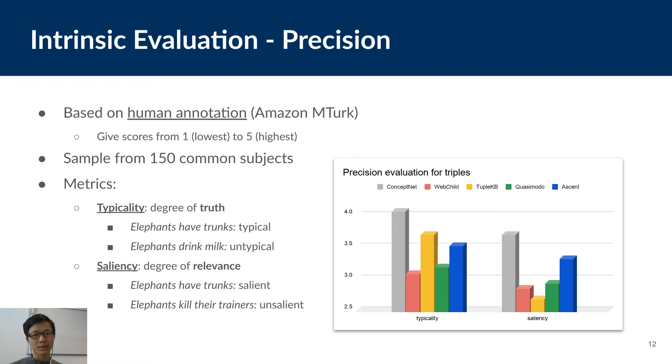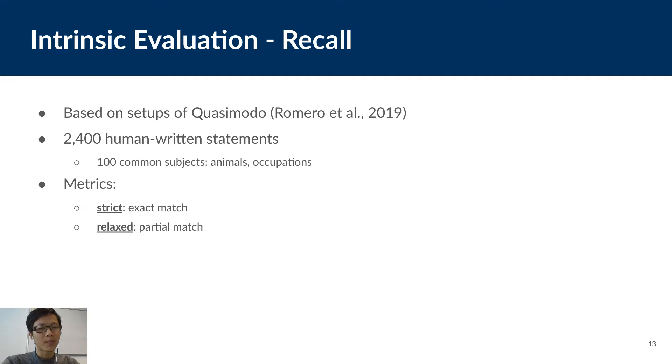The results show that among automatically built KBs including Webchild, Quasimodo, TupleKB, and ASCENT, our KB has the most salient assertions and it still demonstrates competitive quality in terms of typicality. ConceptNet is an outlier here, because it is the only one that was built manually. However, because it was built manually, it has much smaller size than our KB or Quasimodo and Webchild, which were built automatically. The TupleKB, which focuses on special domains like Science, also has limited size compared to ASCENT.